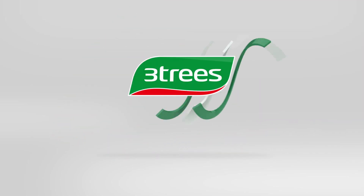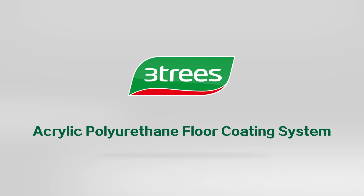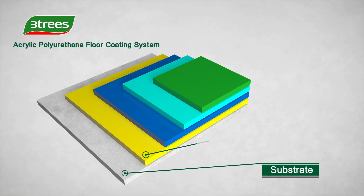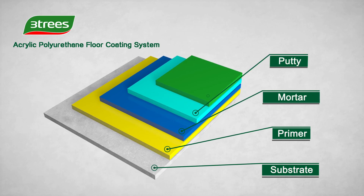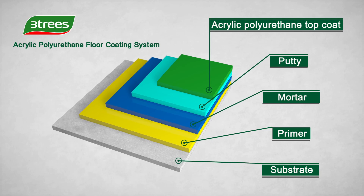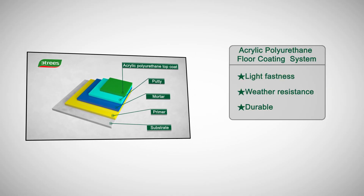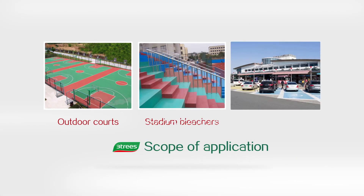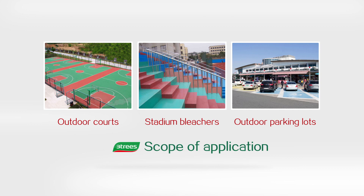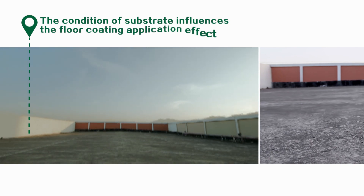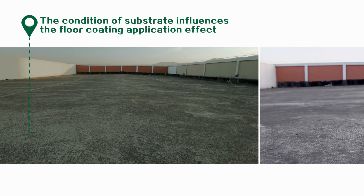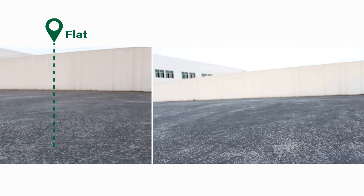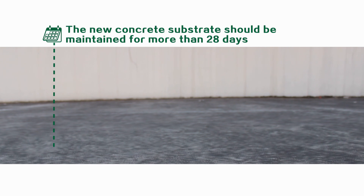Here comes a detailed introduction of 3T Spend acrylic polyurethane floor coating system. The system consists of primer, mortar, putty and acrylic polyurethane top coat. It has such advantages like light fastness, weather-resistant and durable, suitable for outdoor courts, stadium bleachers and outdoor parking lots where exposed to strong sunlight. The condition of substrate influences floor coating application and final effect. Please pay enough attention. Substrate should be flat, firm, clean and dry. The new concrete substrate should be maintained for more than 28 days.